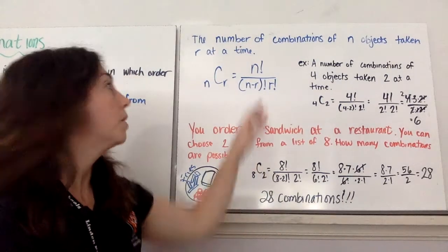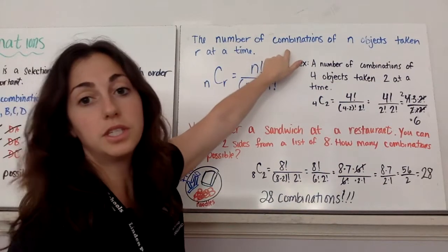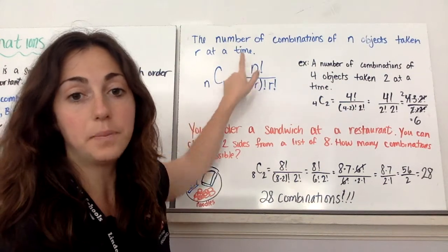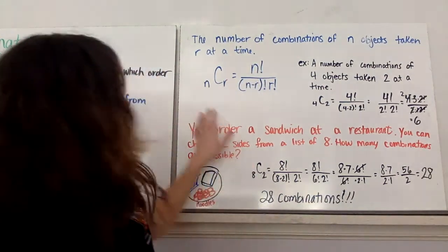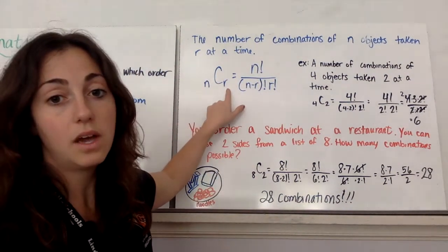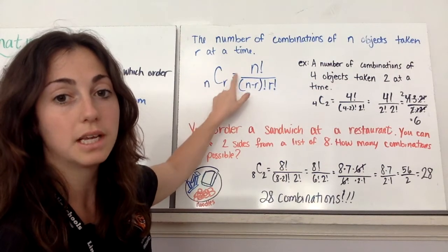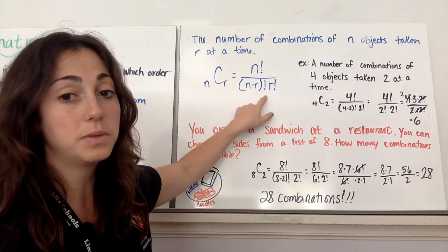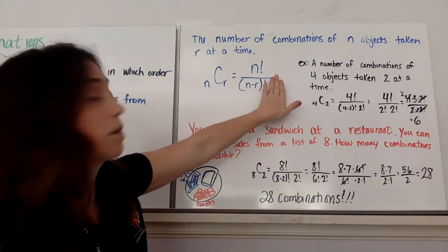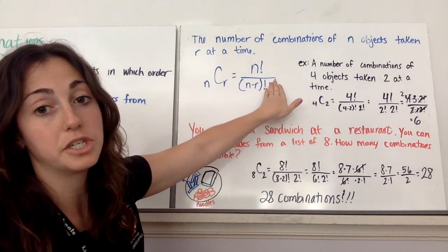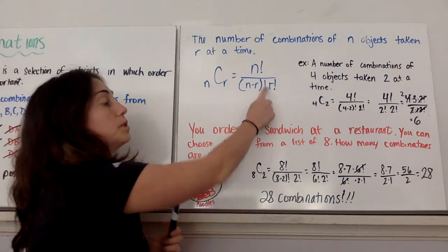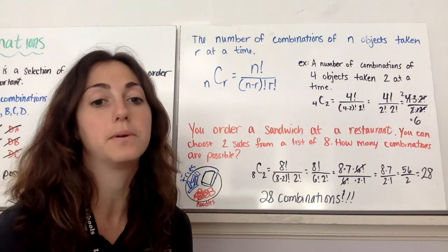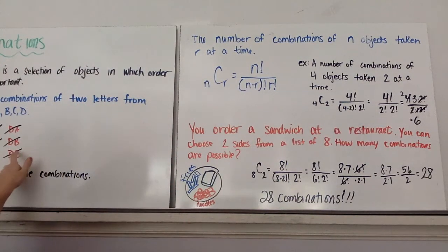So the number of combinations of N objects taken R at a time, we have N, C, R, C for combinations, is N factorial over N minus R factorial times R factorial. So if we ignore this R factorial, that's permutations. But because we're multiplying by an extra R factorial, you're taking care of the doubles. So you're dividing out that repeat.